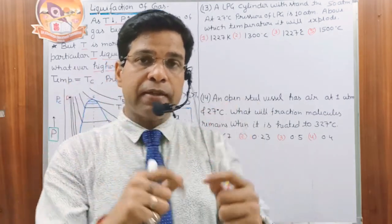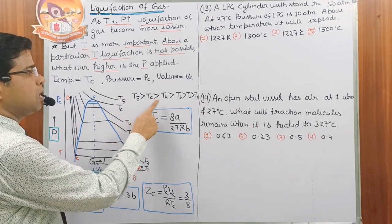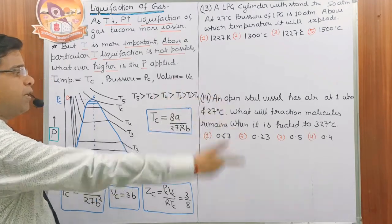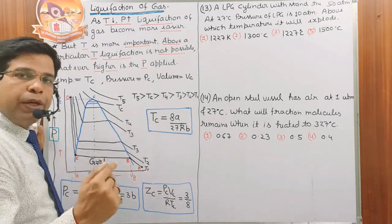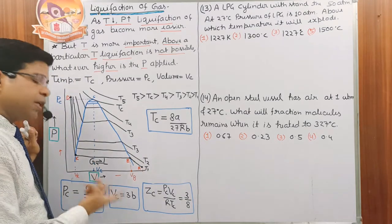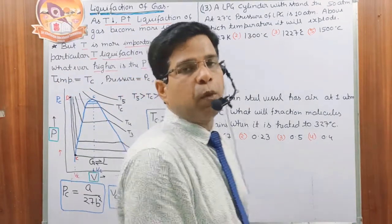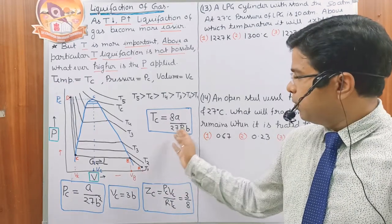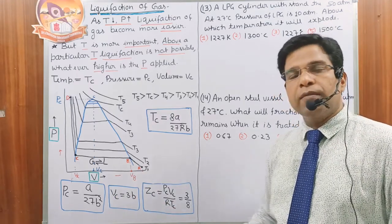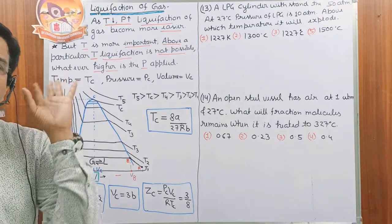At the critical point, the density of gas equals the density of liquid, and the interface between liquid and gas states disappears. The temperature order is T5 > Tc > T4 > T3 > T2 > T1. Critical temperature in terms of Van der Waals constants: Tc = 8a/(27Rb). Critical pressure: Pc = a/(27b²). Critical volume: Vc = 3b. The compressibility factor at the critical point is Zc = PcVc/(RTc) = 3/8, meaning the gas is compressible at the critical point.